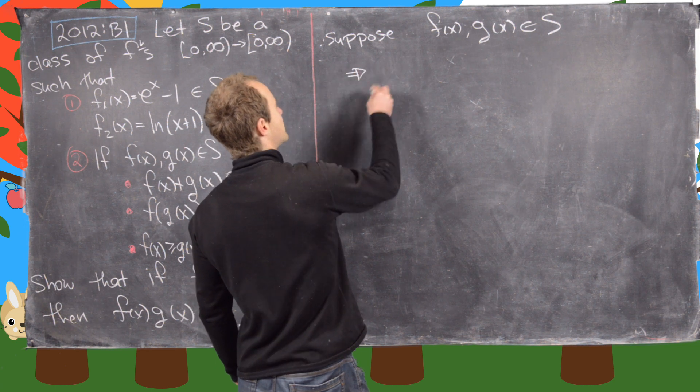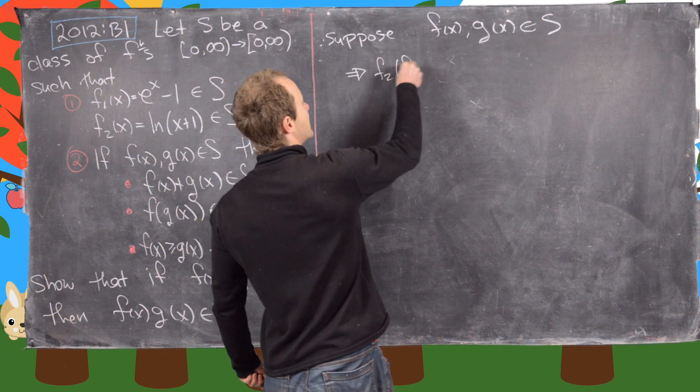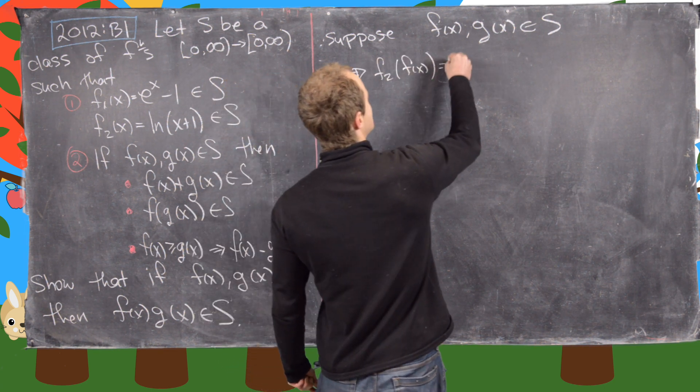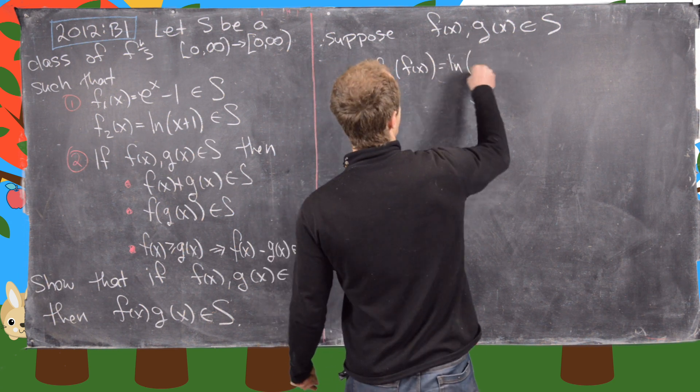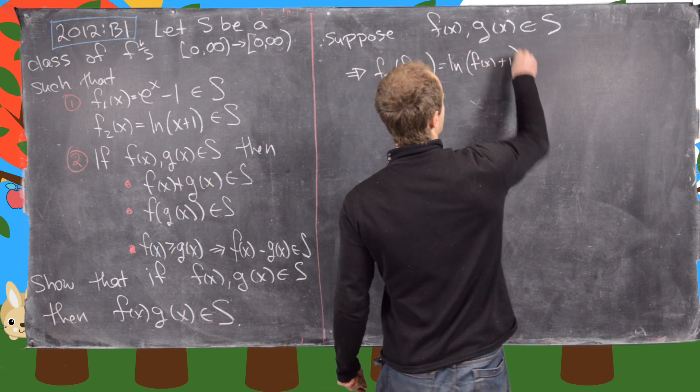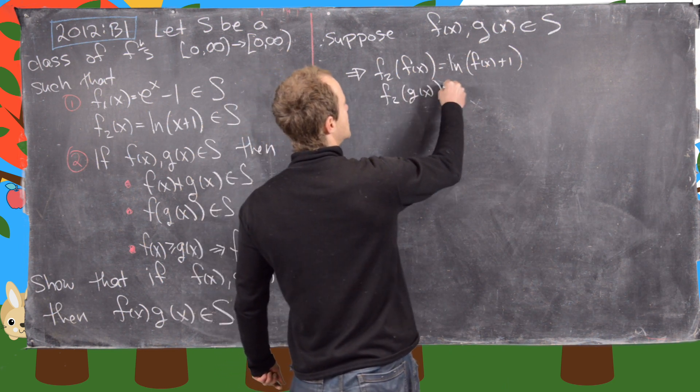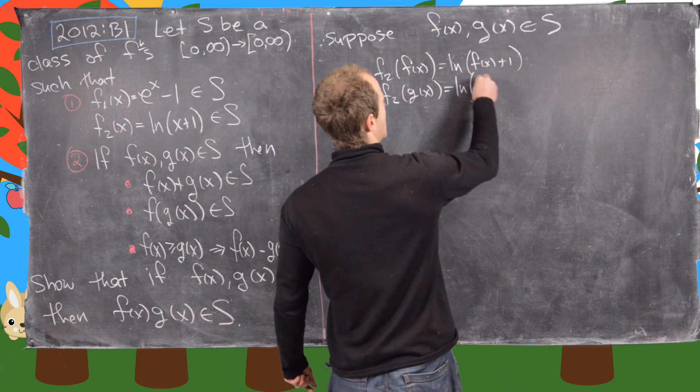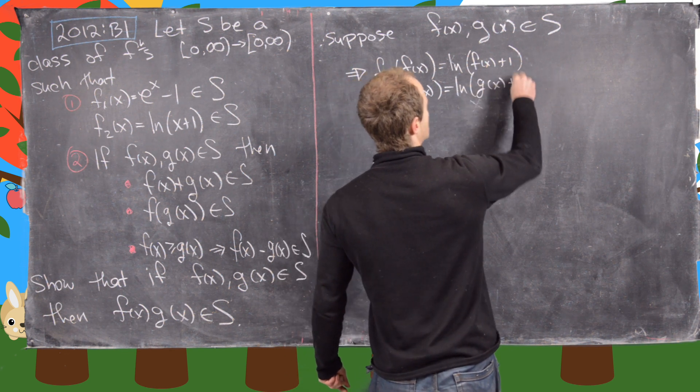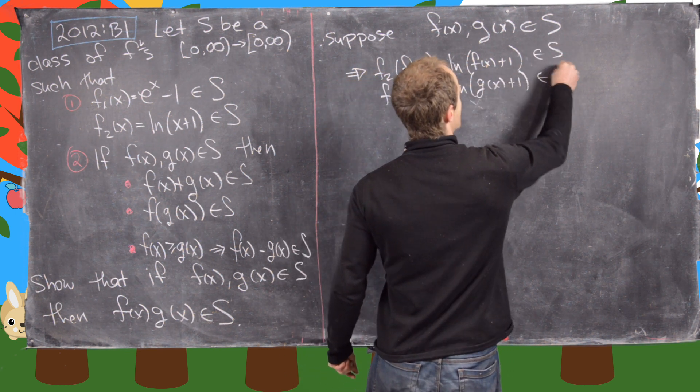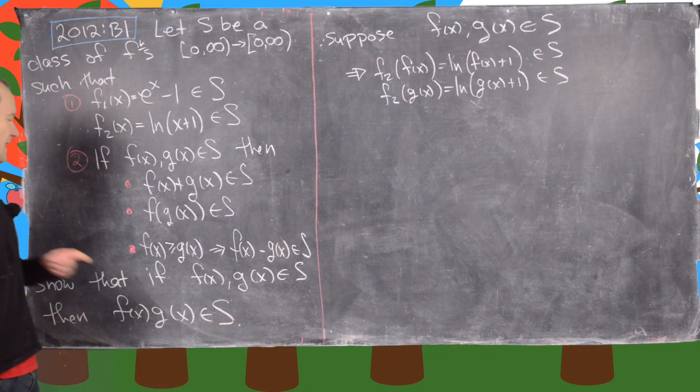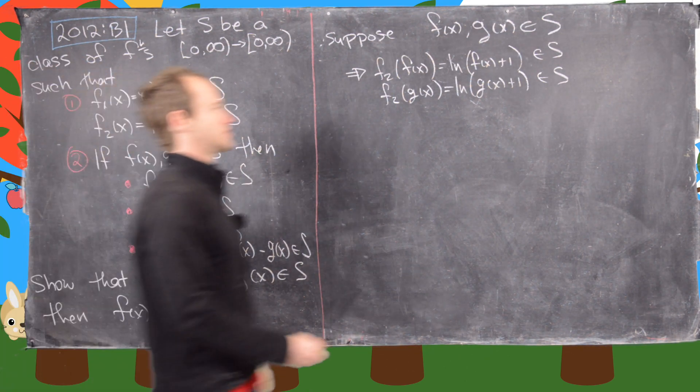So notice this implies that f2 of f of x, which is equal to the natural log of f of x plus 1, and f2 of g of x, which is equal to the natural log of g of x plus 1, tells us that both of those are in S. And notice that is by number 2.